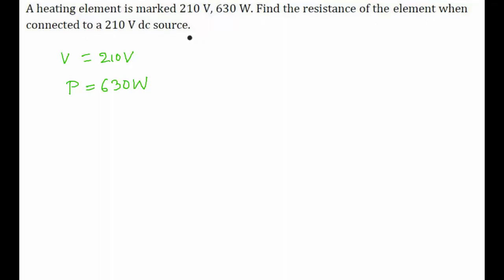So we know that the formula for power is P = V² / R, that is the potential difference squared divided by the resistance. Given to us is 630 watts equals 210 volts, so we will be squaring it and R is the resistance which we need to find.